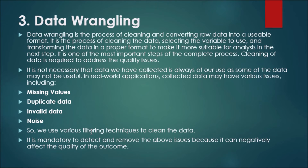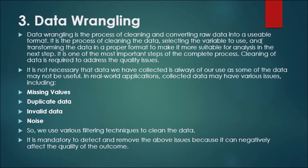The second sub-step of data preparation is data pre-processing, which involves the analysis of data. Step three is data wrangling. Data wrangling is the process of cleaning and converting raw data into a usable format. It is the process of cleaning the data, selecting the variables to use, and transforming the data into a proper format to make it more suitable for analysis in the next step.